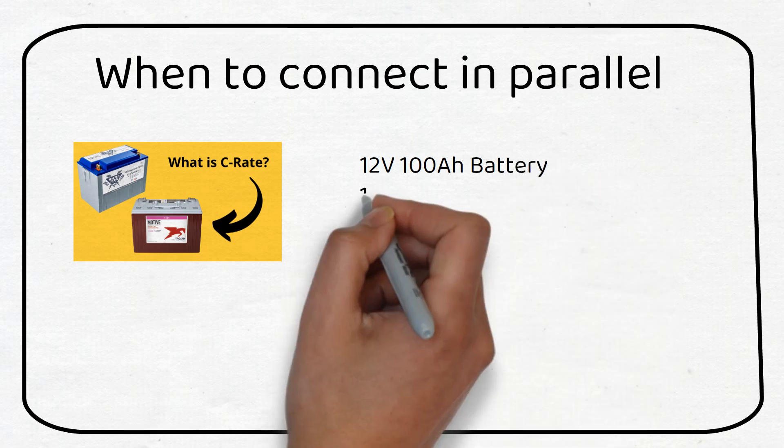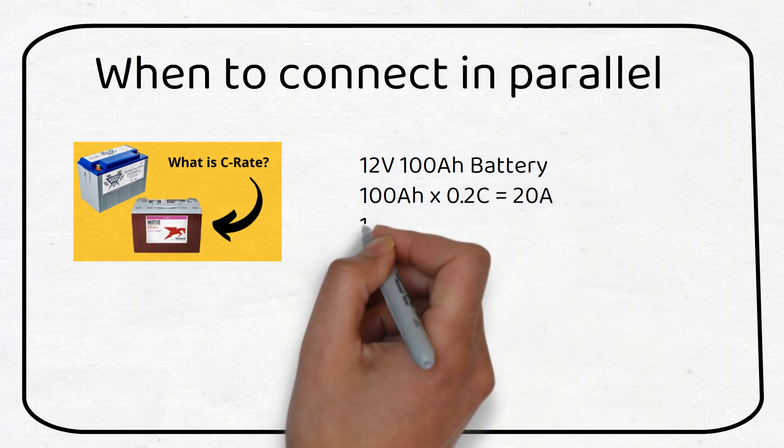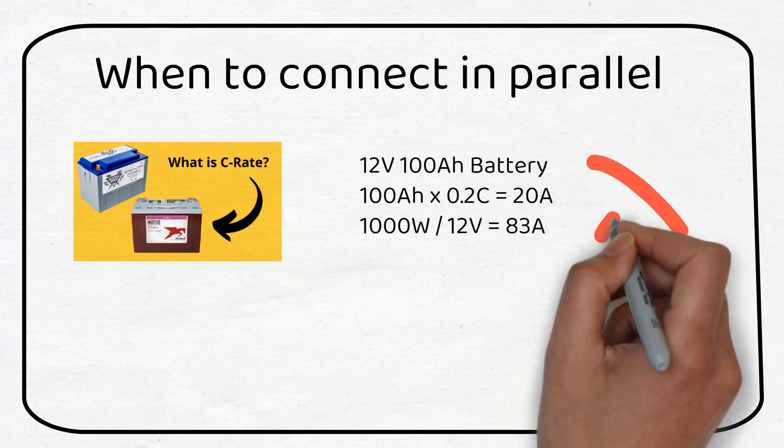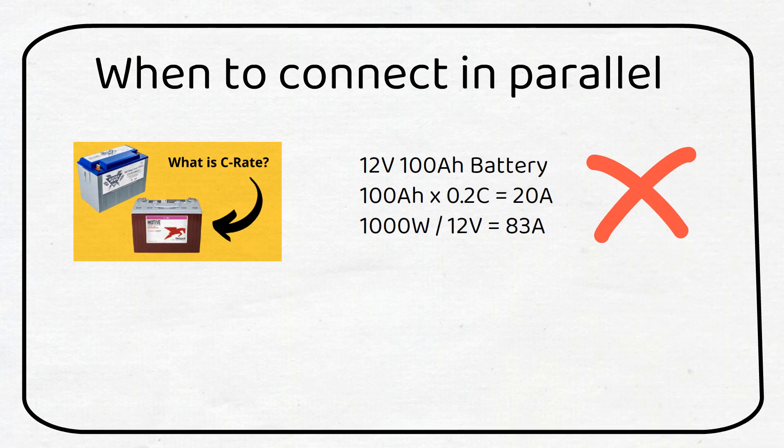Let's say you have a lead acid battery that is 12 volts, 100 amp hours and you have a 1000 watt inverter. The C-rate of a lead acid battery is 0.2C or in this case 20 amps. To feed your inverter you will draw about 83 amps. This is much more than the recommended 20 amp charge and discharge rate. While the system might work it will reduce the lifespan and the capacity of the battery due to heat generation.